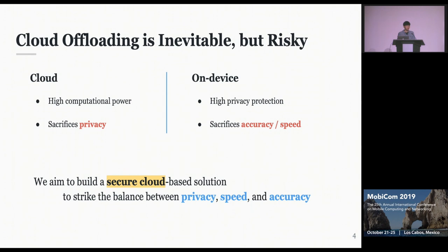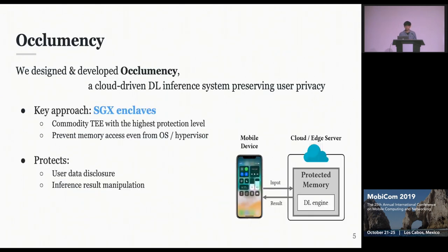Instead of clouds, which sacrifices accuracy, or on-device, which sacrifices accuracy and speed of the model, we aim to build a secure cloud-based solution to strike the balance between privacy, speed, and accuracy. As a solution, we propose Occlumency.